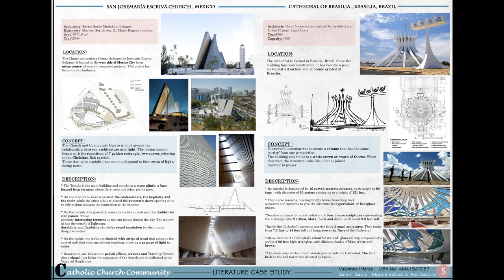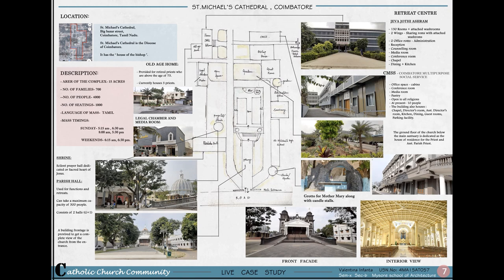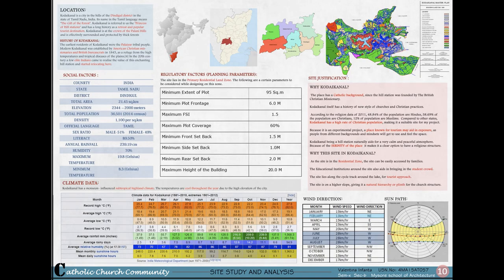My take from the Cathedral of Brasilia design is how a form-based design can tell a story, and the massive use of stained glass to give the feel of a church building, along with new construction technologies. I would like to reflect on similar lines for my project. The life case study is done on St. Michael's Cathedral, Coimbatore, Tamil Nadu, which is the parish church and consists of the bishop's house. My take from this study is the understanding of different spaces within the church complex like parish hall, high school, shrines, prayer hall, seminary, guest rooms, bishop's house, retreat centers, etc. The space of particular interest was the CMS, a blog dedicated for social service open to all, which also consisted of a media and legal office. I used literature case studies to understand concepts and forms of modern churches, and life case studies to understand functionality and spaces in church complexes.